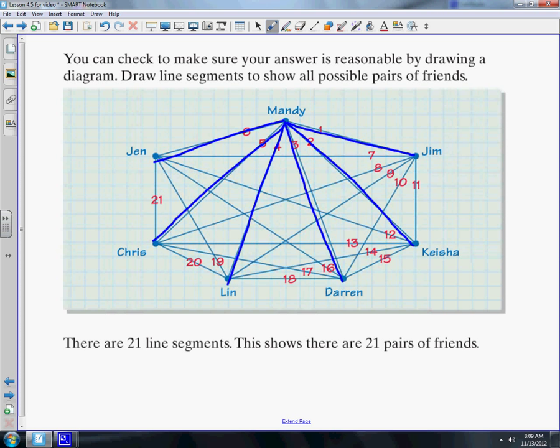Now if I go to Jim, Jim needs to go to five other people. Keisha needs to go to five other people. Darren needs to go to five, and so on. Then you count the lines.